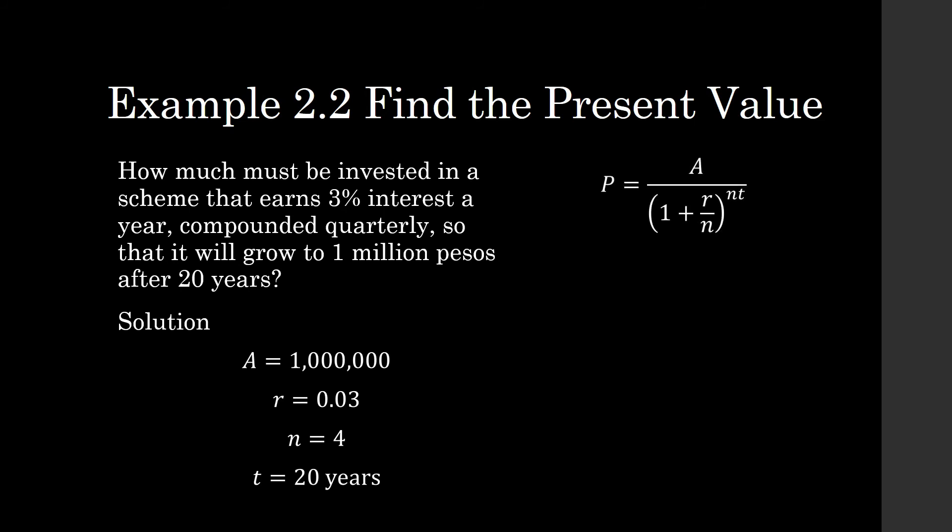So we are looking here for the present value. What is the present value of that 1 million pesos? So you do this step by step. Don't do this in one go. You compute for the denominator, the expression inside the parentheses, and then you raise it to 4 times 20. And then you divide 1 million by 5.93.